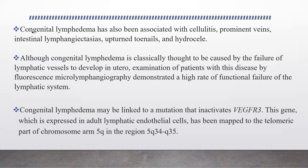Congenital lymphedema may be linked to mutations that inactivate vascular endothelial growth factor receptor 3 (VEGFR3). This gene is well expressed in lymphatic endothelial cells and is mapped to the telomeric part of chromosome 5.